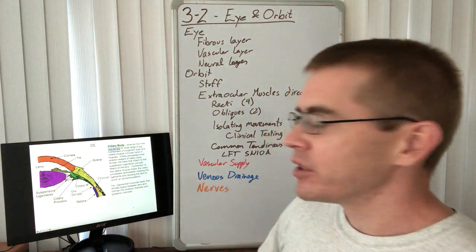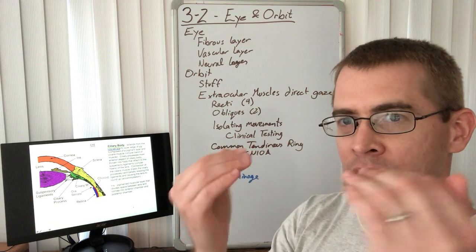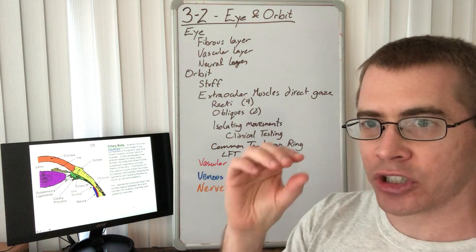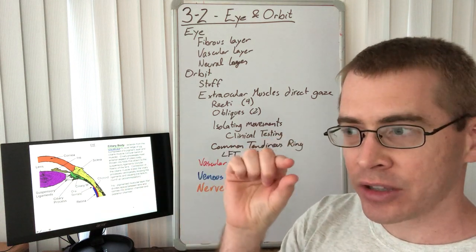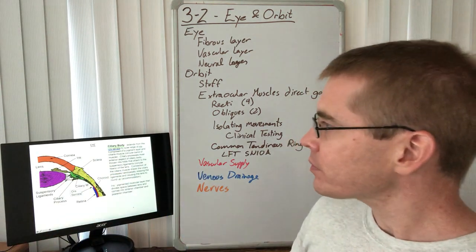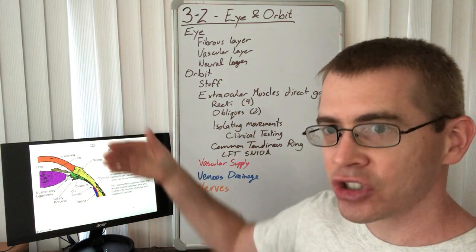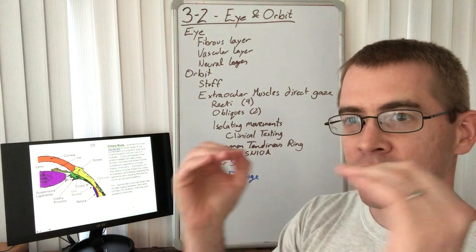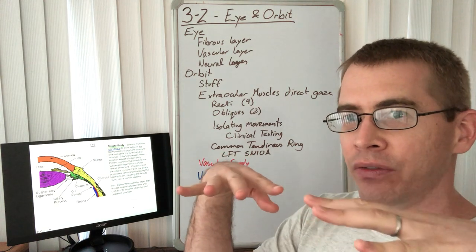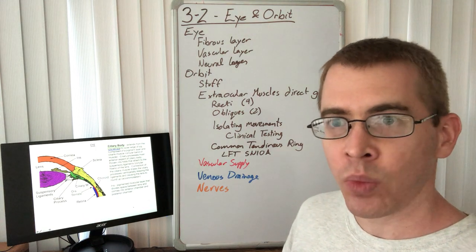Coming off of the ciliary processes are zonular fibers, sometimes called suspensory ligaments, that attach all around the lens to produce accommodation — changing the shape of the lens to focus on distance or near objects. The ciliary body is circular around the entire lens, attaching via these zonular fibers like bicycle spokes on a wheel.